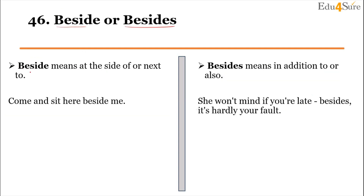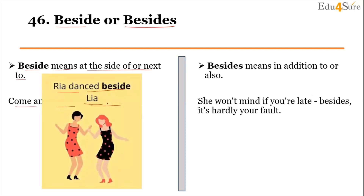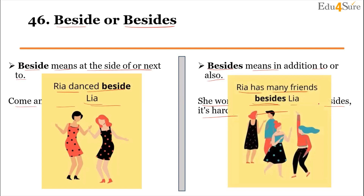Next word pair is 'beside' and 'besides.' Beside means at the side of or next to — meaning right next to something. For example: 'Come and sit here beside me,' meaning come sit next to me. Another example: 'Riya danced beside Lia,' meaning Riya danced at Lia's side. Besides means in addition to or also. For example: 'She won't mind if you are late. Besides, it's hardly your fault.' Another example: 'Riya has many friends besides Lia,' meaning Riya has other friends in addition to Lia. To remember: in 'beside' you can see the word 'side' — so it means at the side of.